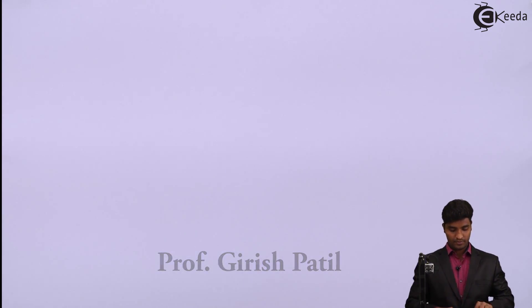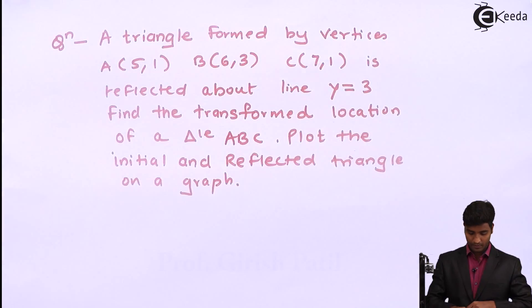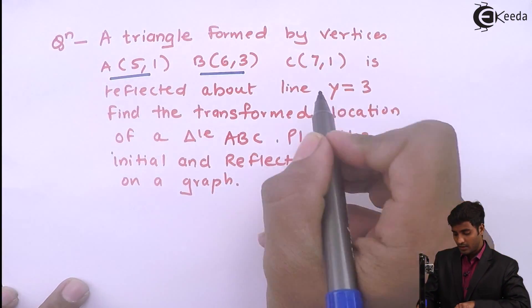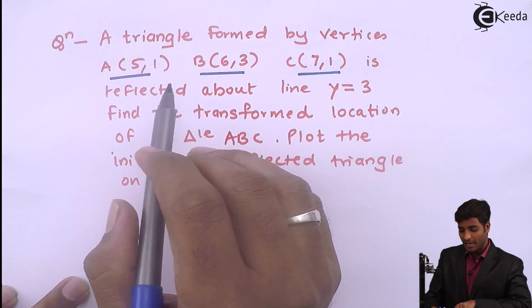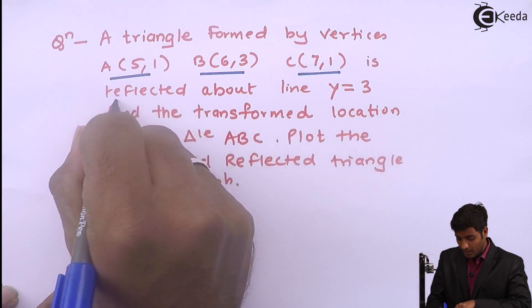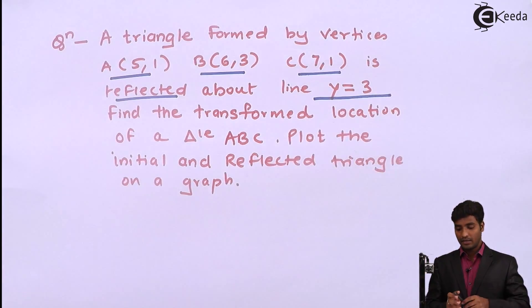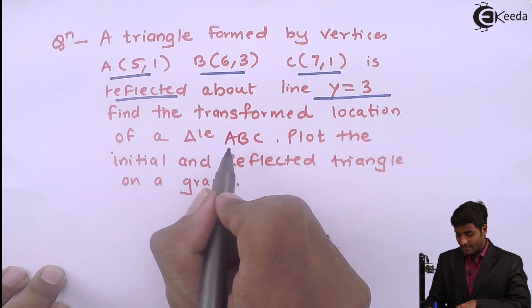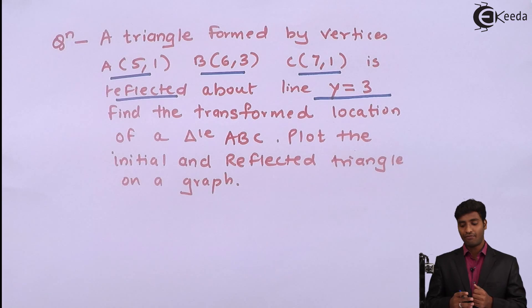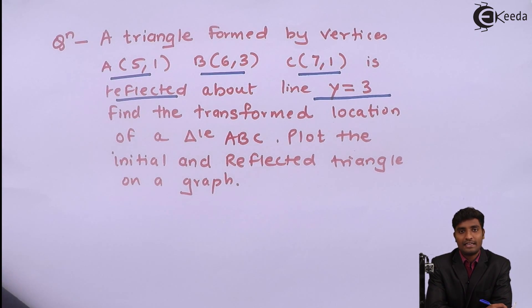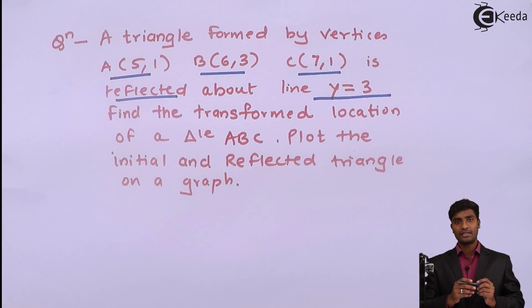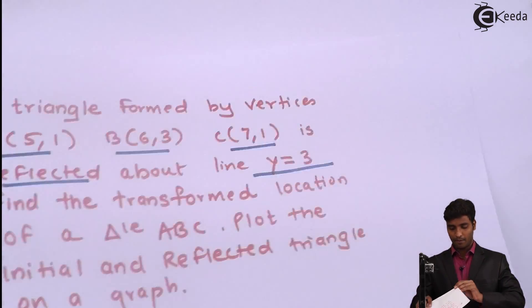Hello friends. We will solve a problem related to reflection, which is also called a mirror. The first problem: a triangle is formed by the vertices A(5,1), B(6,3), C(7,1). This triangle is to be reflected about the line y equals 3. We need to find the transformed location of triangle ABC and plot the initial and reflected triangle on a graph.